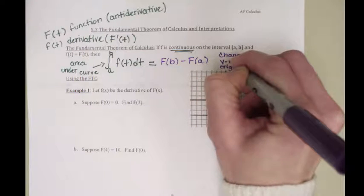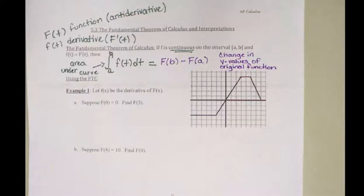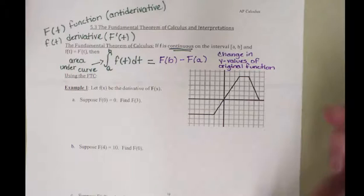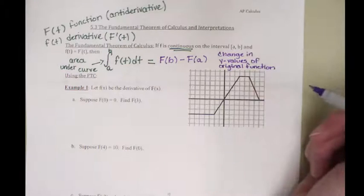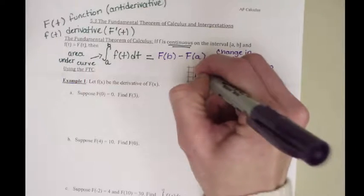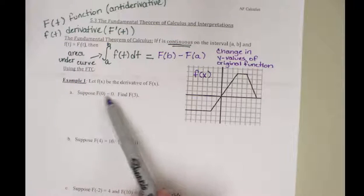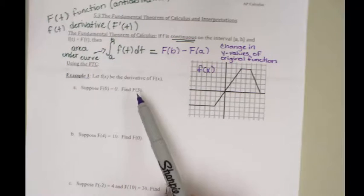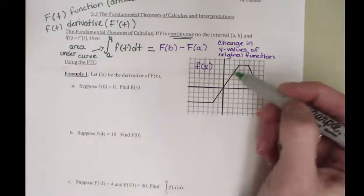We are going to use the fundamental theorem a lot, so you're going to want to memorize it. So how does it work? What can it be used to find? Let lowercase f of x be the derivative of capital F of x. This graph is missing a label, but it's actually lowercase f of x — go ahead and write that in. They want us to find capital F of 3, but we have a derivative graph, so we need to set up an integral using the fundamental theorem.